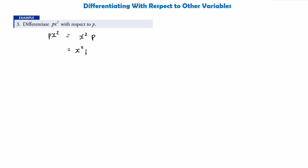Then our p goes from p to the power of 1 to p to the power of 0. And as we said, anything to the power of 0 is just 1. So this is just going to give us x squared. What we're actually doing in this step is d dp of p x squared. This is the more complex style of question you might get, where you're asked to differentiate an expression with respect to a variable when two variables are involved.